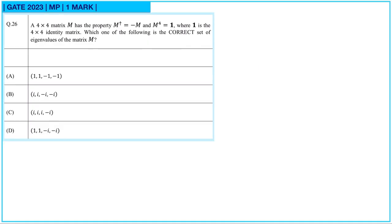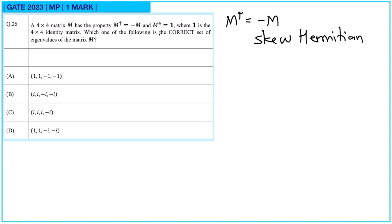Next question. A 4×4 matrix has the property M† = −M, meaning it is a skew-Hermitian matrix, and M⁴ = I, where I is the 4×4 identity matrix. Which one of the following is the correct set of eigenvalues for matrix M?